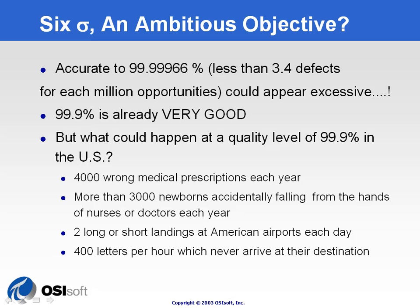Some people argue that the Six Sigma objective is quite ambitious and maybe not realistic — that reaching a maximum of 3.4 parts per million in defects could appear excessive. You might think that 99.9% is very good and maybe enough. But in the US, 99.9% would translate into about 4,000 wrong medical prescriptions every year, more than 3,000 newborns accidentally dropped by nurses or doctors every year, at least two incorrect landings at American airports every day, and up to 400 letters per hour that would never arrive at their destination. Because we're talking about large numbers of observations, that leads to a lot of bad outcomes in the end.